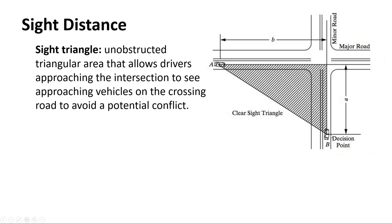Starting back at this decision point — for an uncontrolled or yield intersection — the car approaching on the minor road needs to be able to see the car on the major road. There can't be a hill, a building, or trees or shrubs within that sight triangle. Based on your approach speeds and what you're doing, that determines how big the sight triangle needs to be.